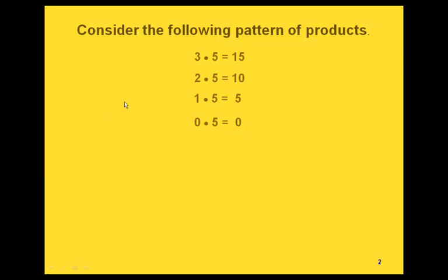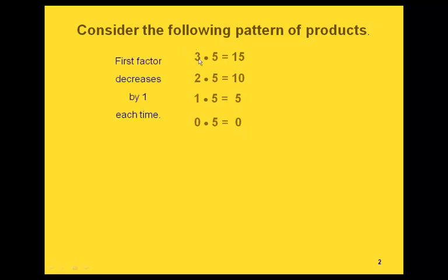If we look at this pattern of products, we have 3 times 5 is 15, 2 times 5 is 10, 1 times 5 is 5, and 0 times 5 is 0. Look at the pattern of the results: our first factor is decreasing by 1 each time, and our product decreases by 5 each time.